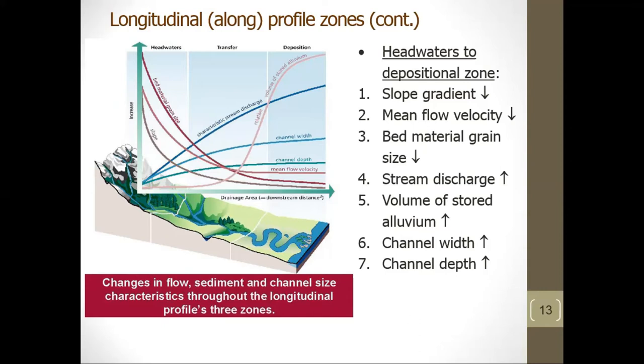This figure shows changes in flow, sediment, and channel size characteristics throughout the three longitudinal zones. From headwaters to the depositional zone, the slope gradient decreases, mean flow velocity decreases, bed material grain size decreases, while stream discharge increases, volume of stored alluvium increases, channel width increases, and channel depth increases.